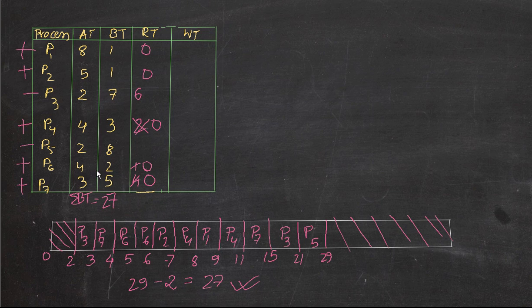That's the preemptive scheduling algorithm — we preempt the current process if we get a smaller process within that arrival time. Now we need to find the waiting time. Let's start calculating it.